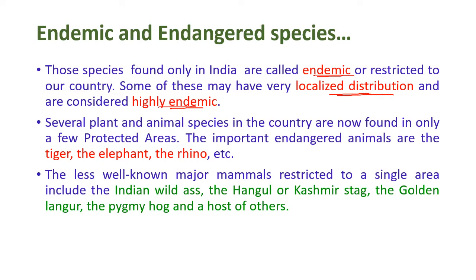Several plant and animal species in the country are now found only in a few protected areas. The important endangered animals include the tiger, elephant, and rhino. Less well-known major mammals restricted to a single area include the Indian wild ass, the Hangul or Kashmiri stag, the golden langur, the pygmy hog, and a host of others.